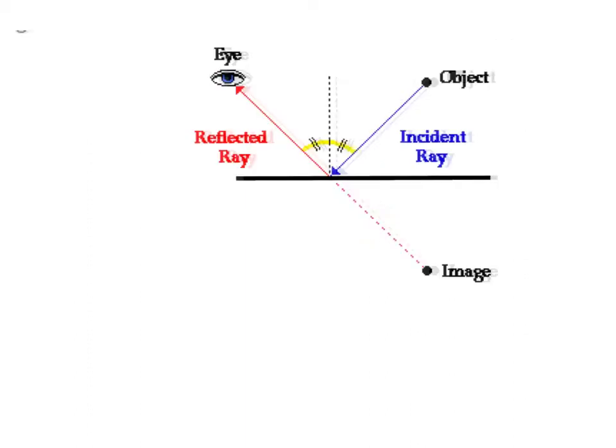So this is what you see when you're looking at yourself in a mirror. Let's say there's an object up here. It's going to reflect through the mirror. Remember your reflected ray is the same angle as the incident ray.